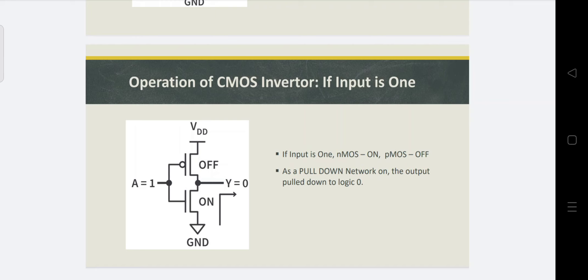If the NMOS transistor is on, the PMOS transistor is obviously off and acts as an open switch. The bottom NMOS transistor acts as a closed switch, and since NMOS is connected to ground, the given logic 1 voltage is pulled to ground so we get logic 0 as output.